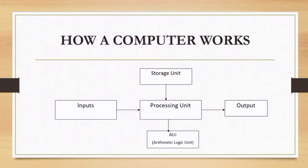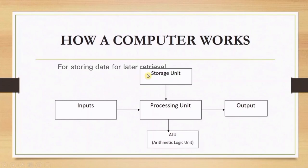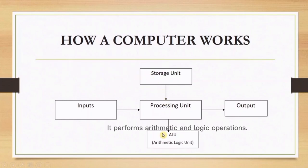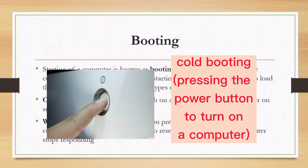How a computer works: we start with input, then go to the processing unit. Under the processing unit we have the storage unit and the arithmetic logic unit, and then we have output. Booting refers to the process of starting up your computer. We have two types of booting: cold booting and warm booting. Cold booting is when you switch on your computer — it performs a power-on self test by pressing the power button on your CPU.